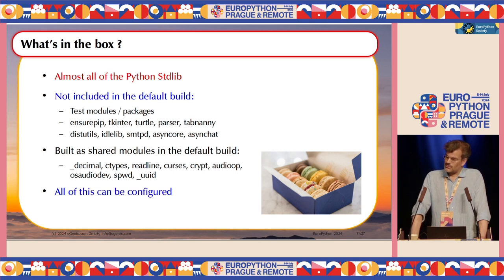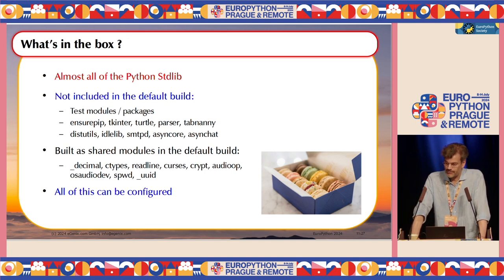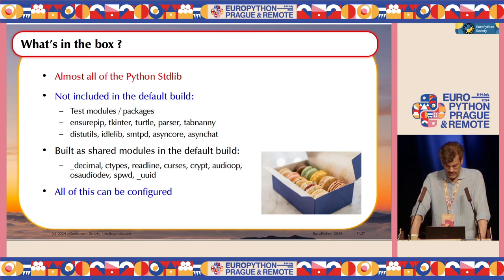I mentioned what's in the box, but out of fairness let me also disclose what's not included. The test modules are not included. Some modules we don't need are not included, like ensurepip — you can install that if needed using get-pip.py. Tkinter is not included, turtle is not included, parser, tabnanny. We removed distutils because it's been deprecated and will be removed in 3.13.